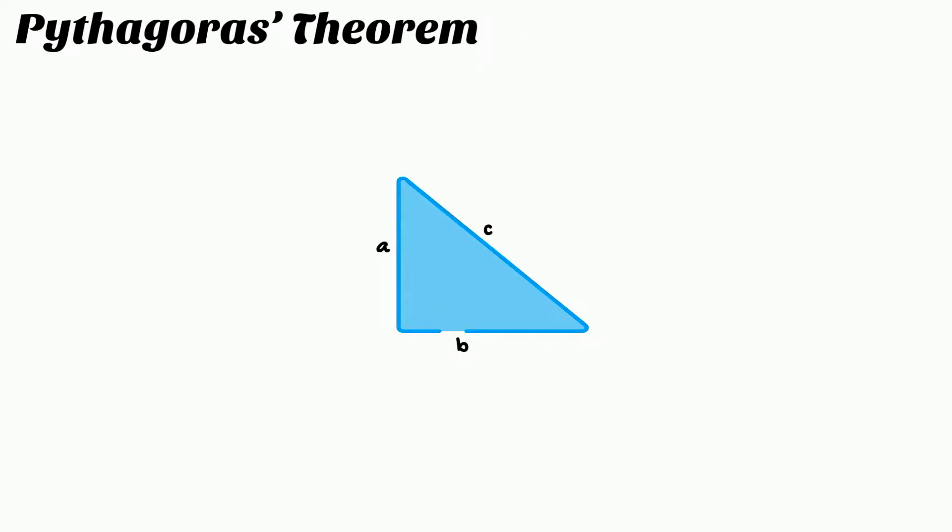The longest side of a right-angled triangle is known as the hypotenuse. We can use Pythagoras's theorem to find the hypotenuse if we know the other sides. According to Pythagoras's theorem,